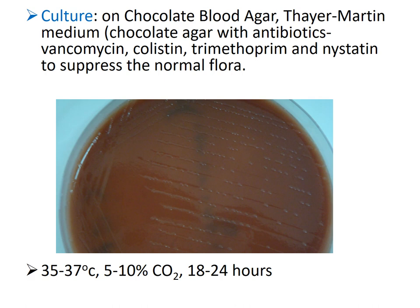The culture media is chocolate blood agar. For high vaginal swabs from females, we can culture on Thayer-Martin medium, which is chocolate blood agar potentiated with antibiotics — vancomycin, colistin, trimethoprim, and nystatin — to suppress normal flora that could be picked up when obtaining specimens from female patients. Incubate at 35–37°C in an atmosphere of increased CO2; within 18 to 24 hours you can get colonies on the plate.